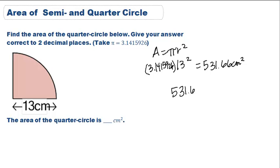To find the quarter part of it, we do 531.66 and divide that by 4 because a quarter is 1 fourth of the entire circle.